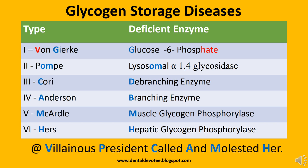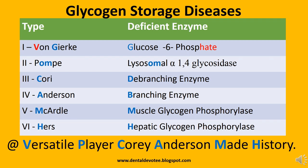McArdle type 5 gives the muscle glycogen phosphorylase, and Hers gives the hepatic glycogen phosphorylase — M for muscle and H for hepatic. These are all the glycogen storage diseases and the deficient enzymes associated with them.